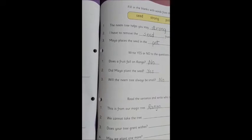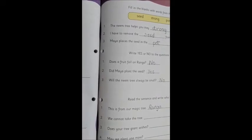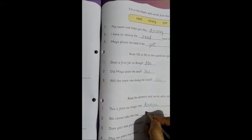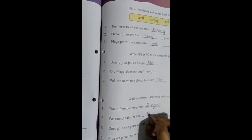Now moving on to the next one. We cannot take the tree. So Maya wanted to take the tree, and who said we cannot take the tree? Pa, the father. So he is Pa.